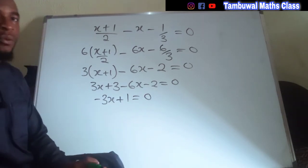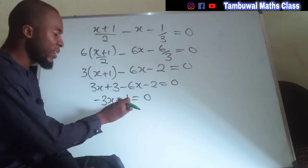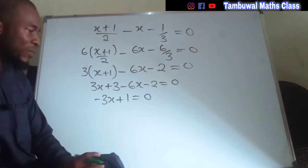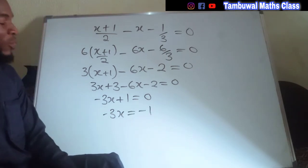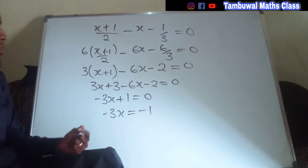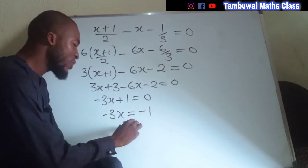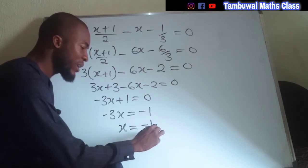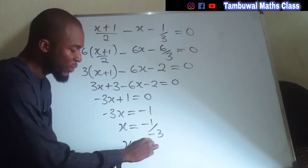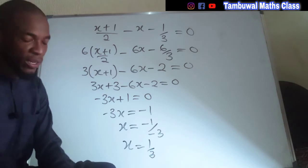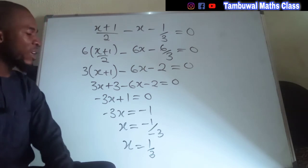Now we are going to subtract 1 from both sides — subtract 1 here and subtract 1 here — which is just like taking 1 to the other side, making it negative 1. So negative 3x equals negative 1. To find the exact value of x, we divide both sides by the coefficient of x, which is negative 3. x equals negative 1 divided by negative 3, and the negatives cancel out, leaving x equal to 1 over 3. Hence the value of x is 1 over 3.